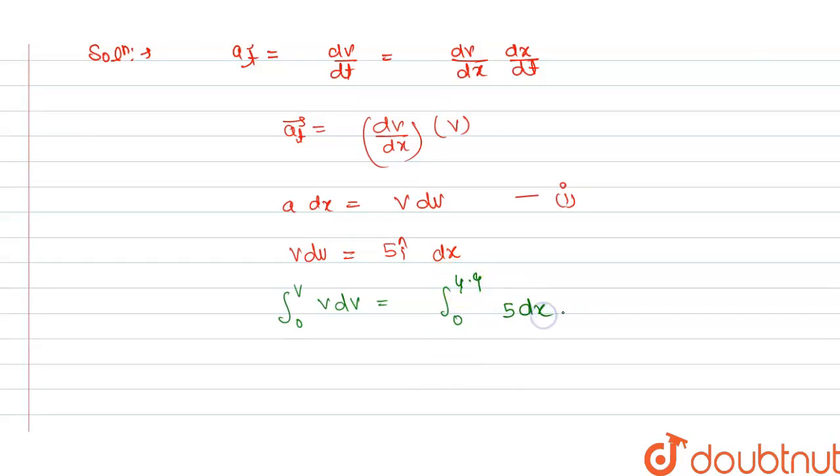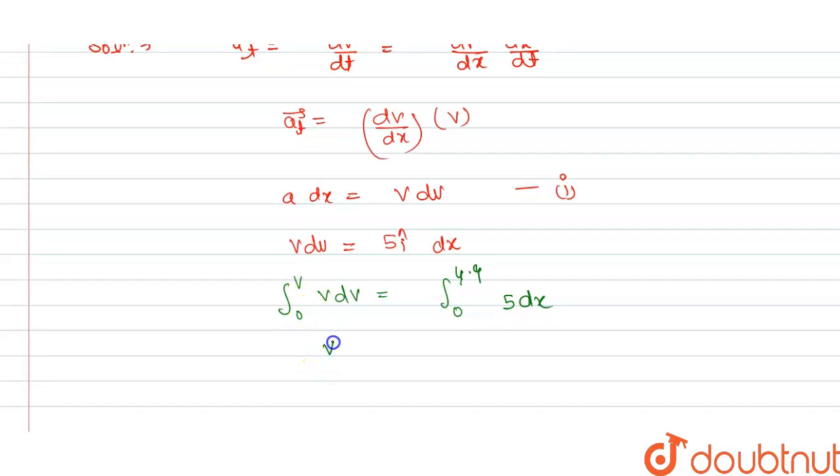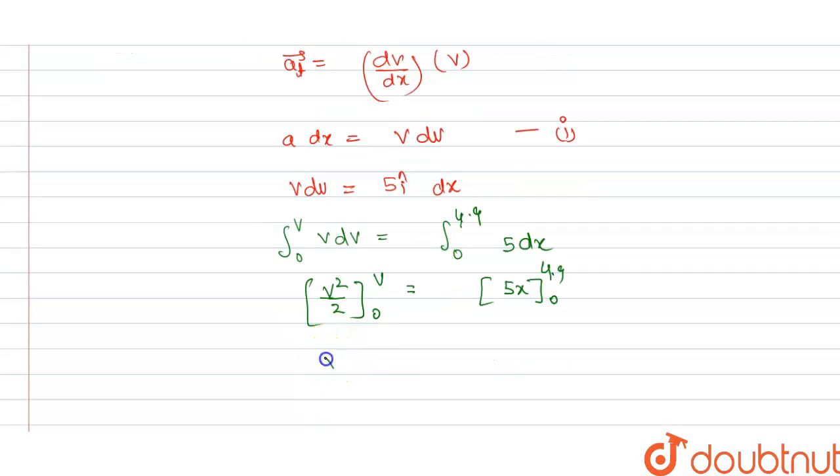We have to integrate this. From this we get v²/2 evaluated from 0 to v, and this equals 5x evaluated from 0 to 4.9.